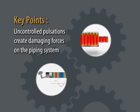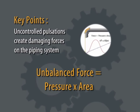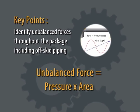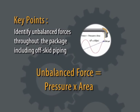Unless controlled, pulsations create damaging forces on the piping system. The unbalanced force equals pressure times area. Unbalanced forces must be identified throughout the package, including off-skid piping.